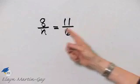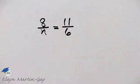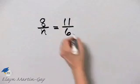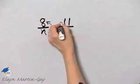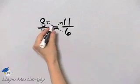Let's find the unknown number n that makes this a true proportion. We'll do so by first setting cross products equal. So let's find those cross products.